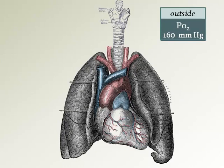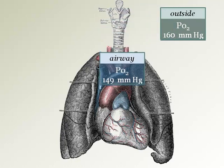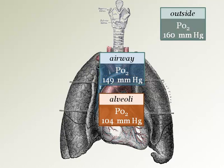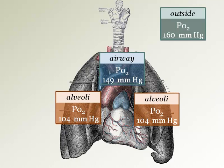So far we have only discussed the air outside. When we breathe air in, we humidify it, or add water vapor to the air. This actually dilutes the air. At sea level, this reduces the incoming PO2 from 160 mmHg to 149 mmHg. Once the breath of air gets into the lungs, it mixes with the old outgoing air. This further reduces the PO2 to 104 mmHg in the alveoli.